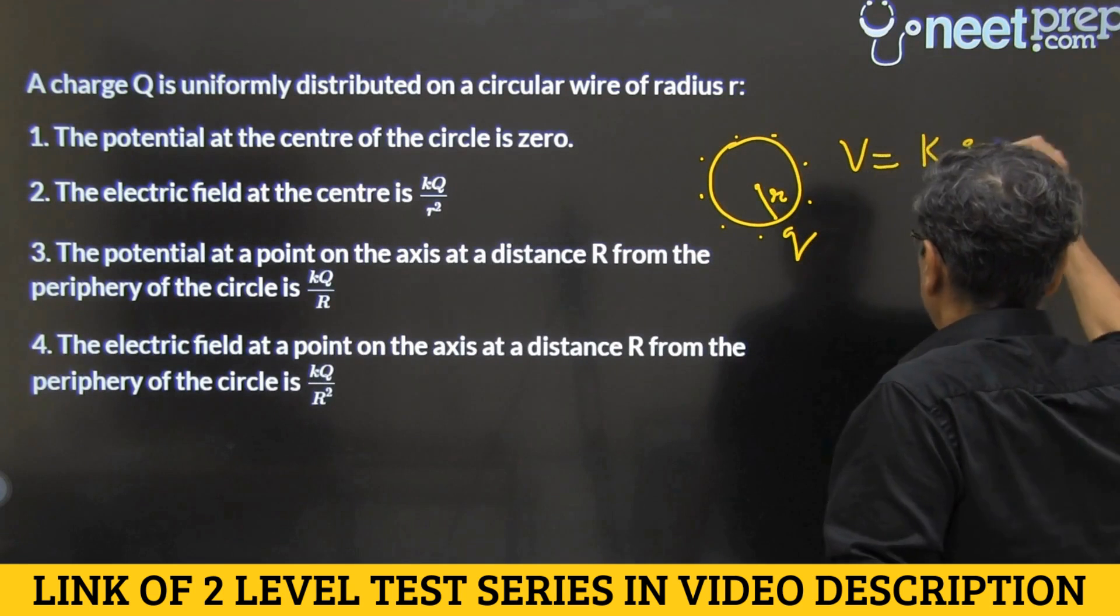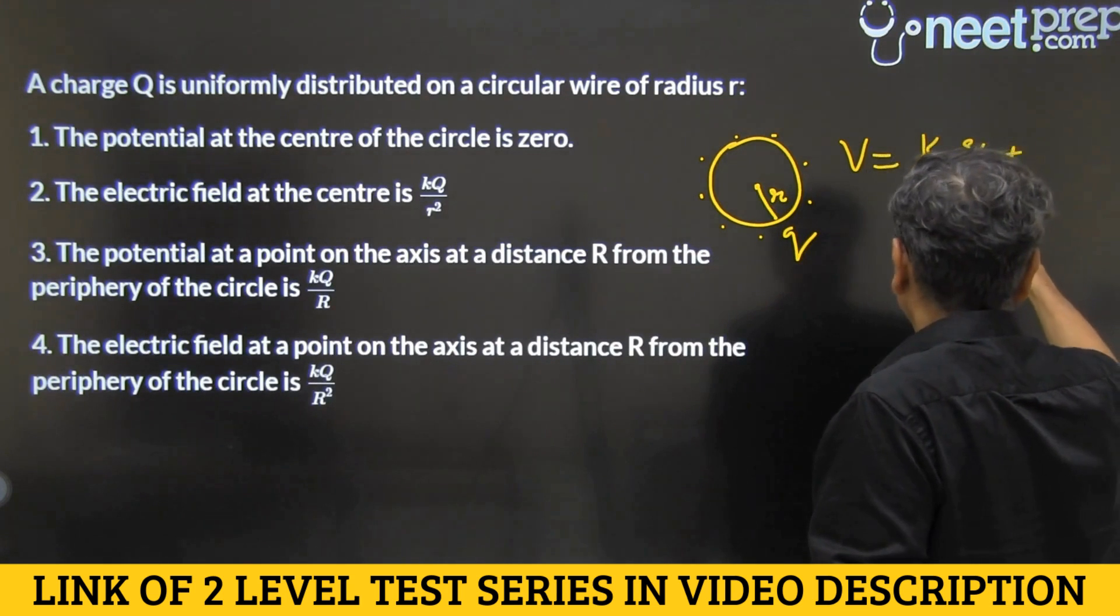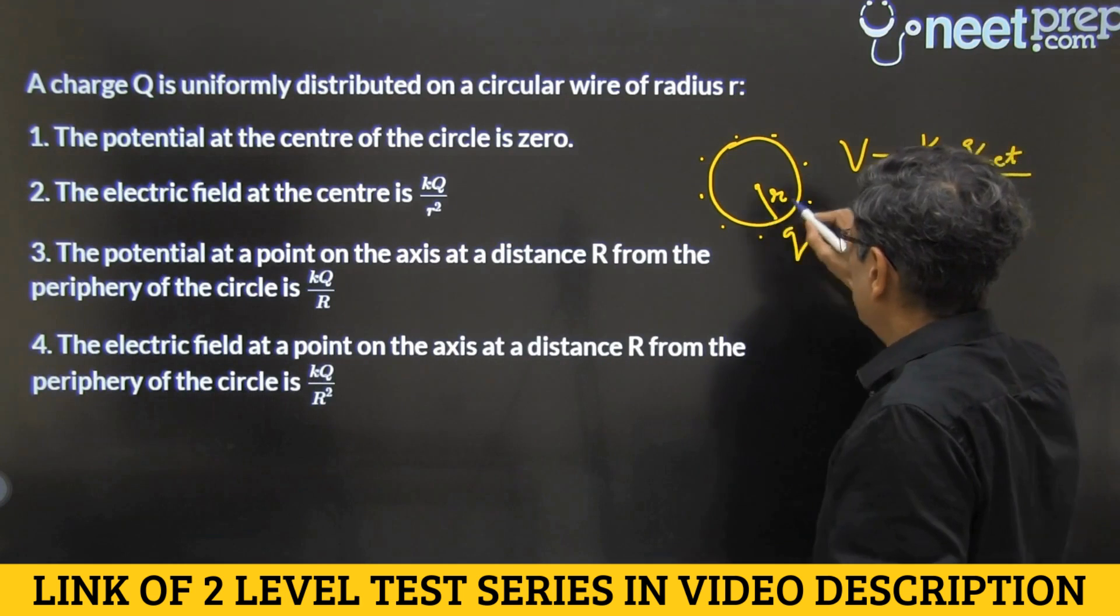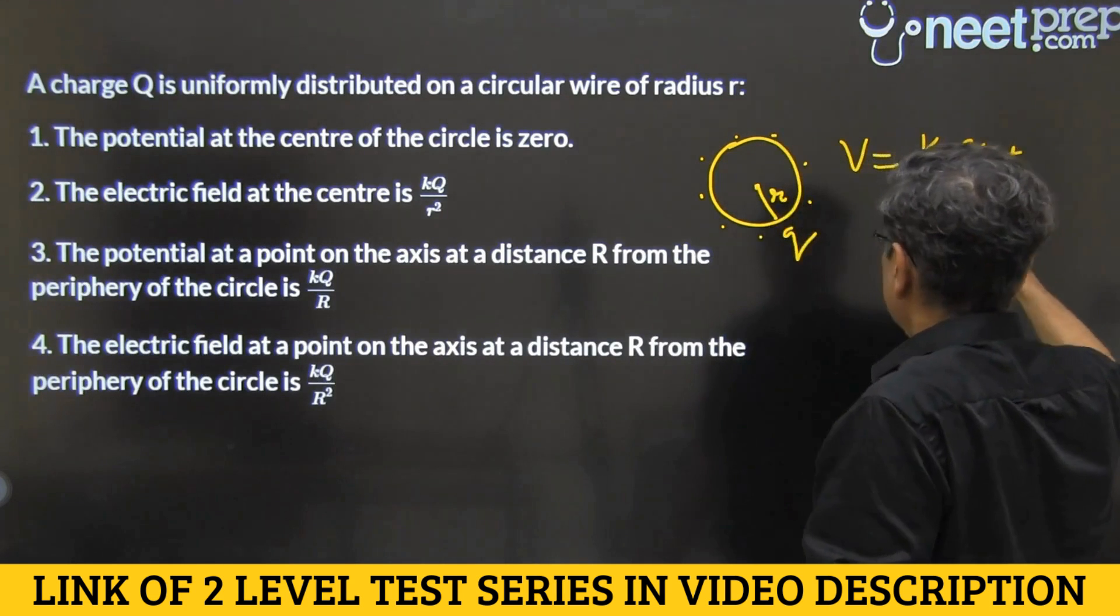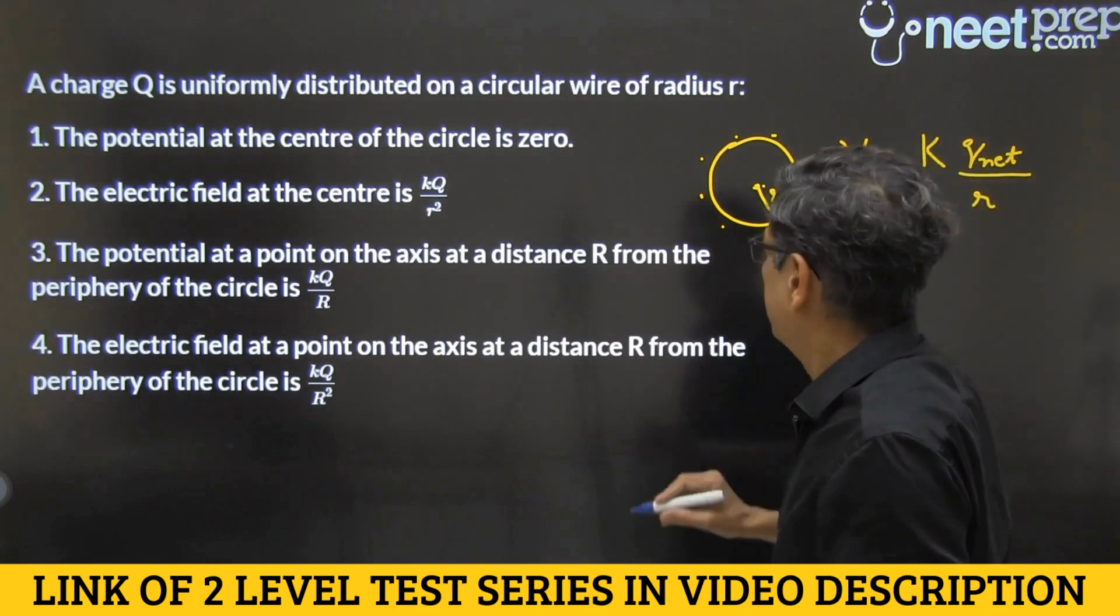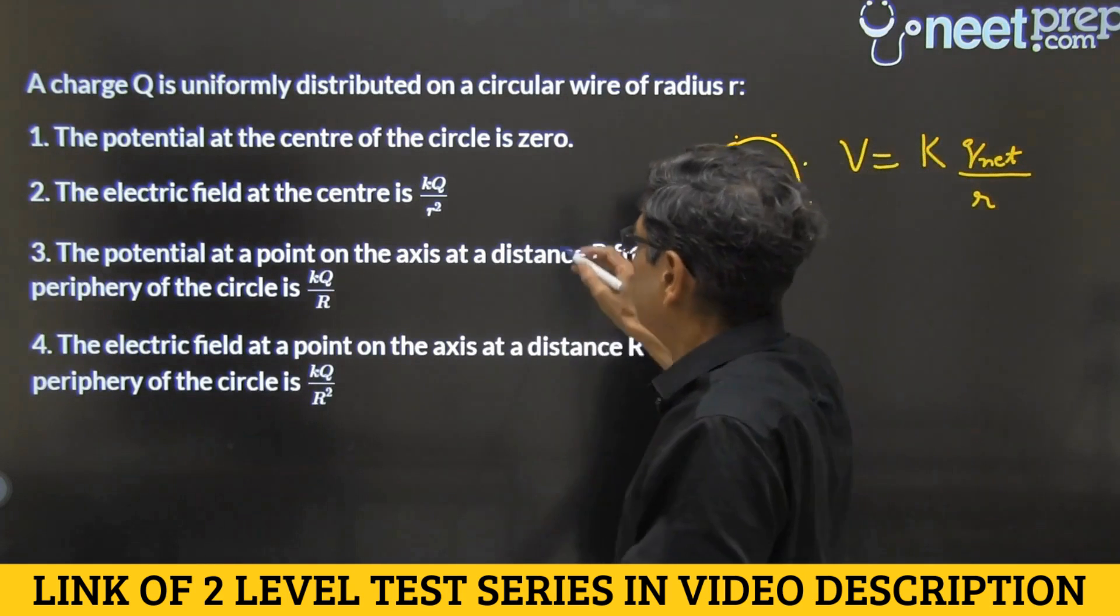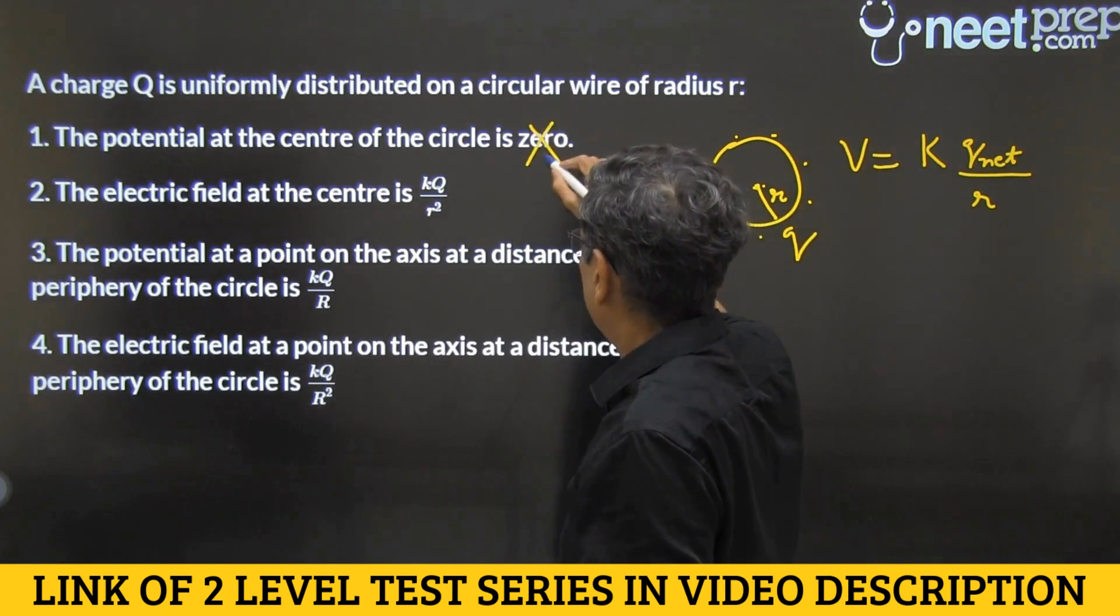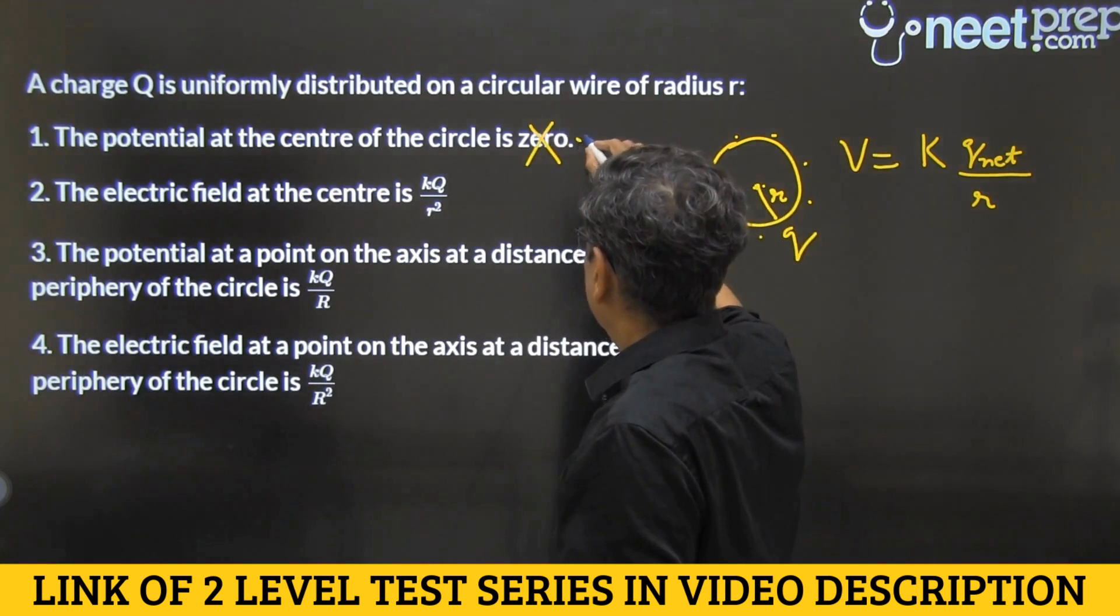K, add up all the charges divided by the common distance R. So here total charge is Q only. So potential at the center would be KQ by R and it won't be zero. This is wrong. It won't be zero, it will be KQ by R.